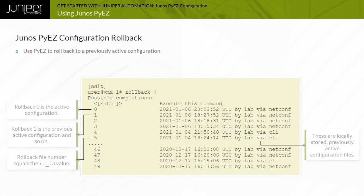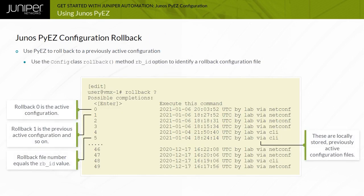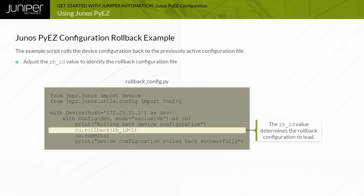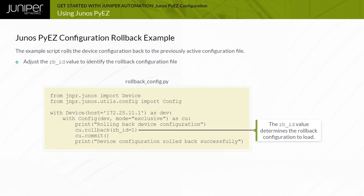The Junos PyEasy config object rollback method supports an rbid option that is used when performing configuration rollback operations. These operations are equivalent to a Junos CLI configuration mode rollback command. This example script demonstrates using the config object rollback rbid=1 method option to roll back the device configuration to the previously active configuration, equivalent to a rollback 1 Junos CLI command.